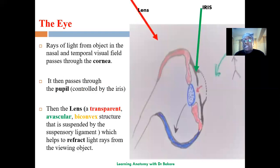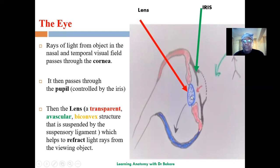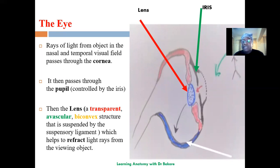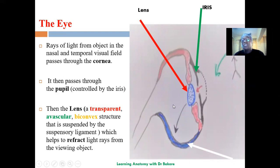We have the lens, located behind the pupil. What holds the lens in place is the ciliary body. And of course we have the retina, lining the posterior part of the eye. We also have the retina around this region. So those are the basic structures of the eye.